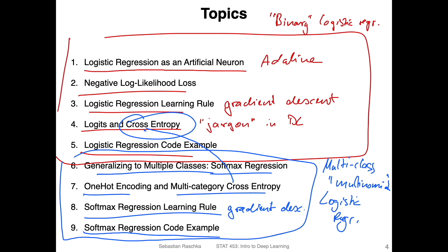And then in the next lecture on Thursday, what we will do is we will just add a hidden layer to the softmax regression model, and then we have a multi-layer perceptron or first small deep neural network. Alright, so with that, let's get started with logistic regression as an artificial neuron.